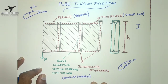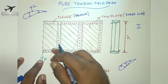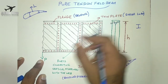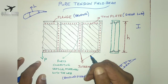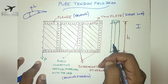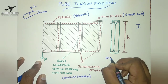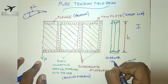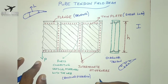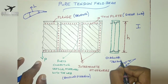When the load is applied, the entire thin plate takes the load as tension. We will see the maximum load and maximum stress that can be carried by a tension field beam, and we will study about diagonal tension in the next lecture. Hope you are doing well — thank you for listening, take care.